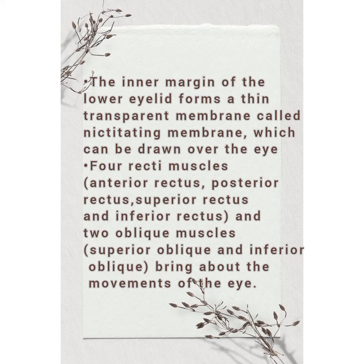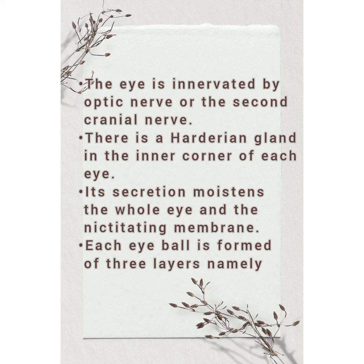Four recti muscles — anticus, posticus, superior rectus, and inferior rectus — and two oblique muscles, superior oblique and inferior oblique, bring about the movement of the eye. The eye is innervated by the optic nerve, or the second cranial nerve.